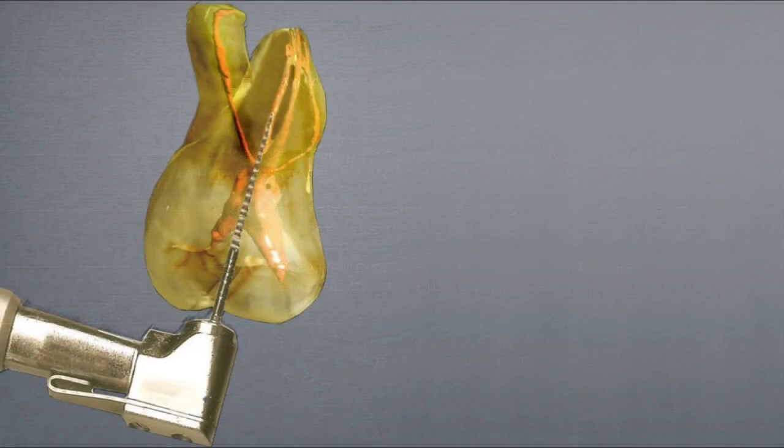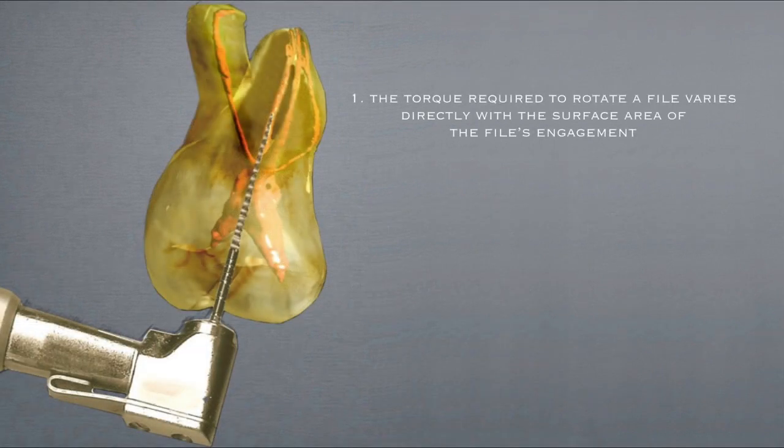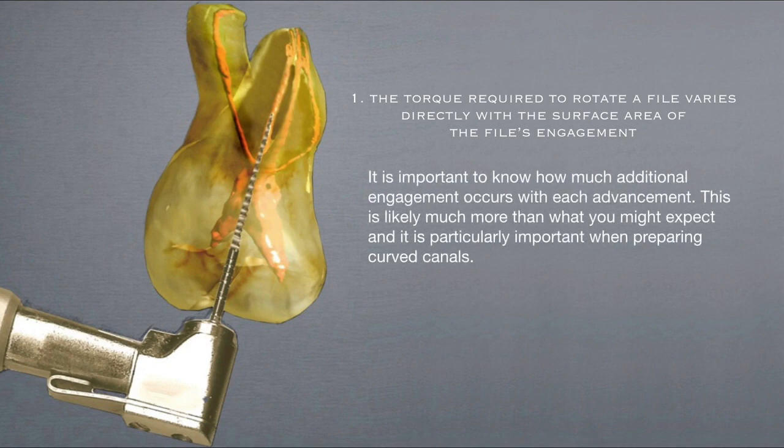Let's examine the first relationship. The torque required to rotate a file varies directly with the surface area of the file's engagement. It's important to know how much additional engagement occurs with each advancement. This is likely much more than what you might expect, and it's particularly important when preparing curved canals.